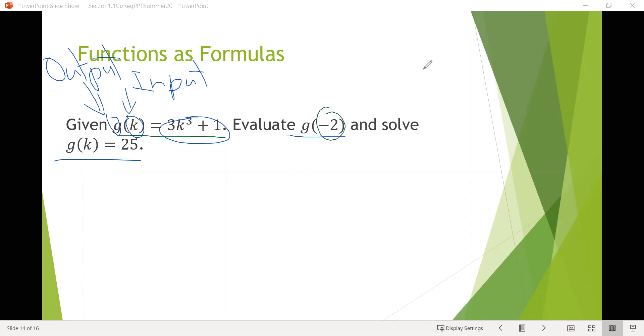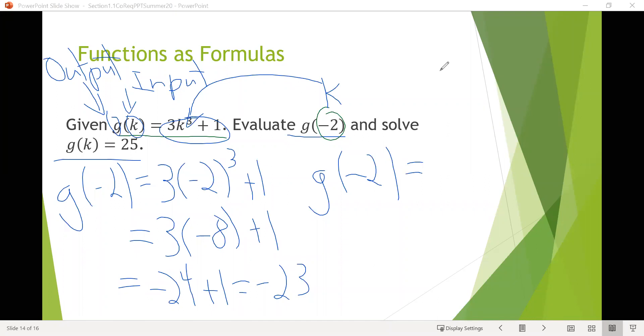Notice on this first part they've given us the input, the thing on the inside, so we need to find the output. They've given us a value for k, that negative 2 is in the place of k. So we can just plug that into the formula. g of negative 2 equals 3 times negative 2 cubed plus 1. Following our order of operations, negative 2 cubed is negative 8, so we'd have 3 times negative 8 plus 1. 3 times negative 8 is negative 24, plus 1 would be negative 23. So g of negative 2 equals negative 23.